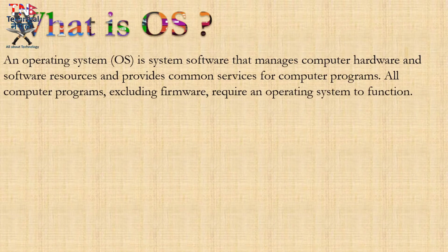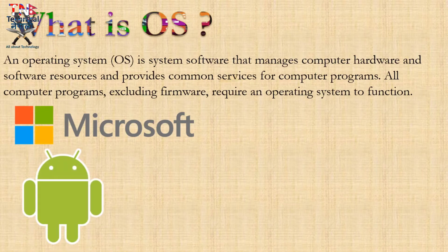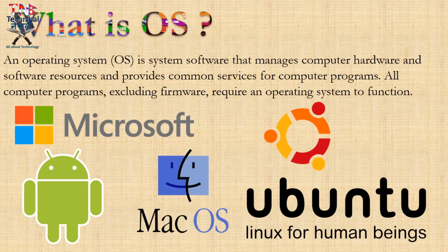The operating system — for example, Microsoft makes Windows. We have Windows XP, Windows 10 which is a newer version. Android is a Linux-based mobile OS. Mac OS is made by Apple. Linux is also an operating system for general use. These are the main operating systems.